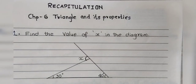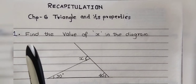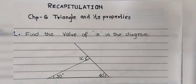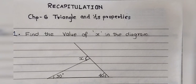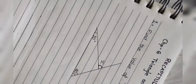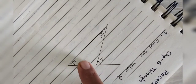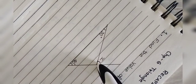The first question of the recap is: find the value of x in the given diagram. Triangle and its properties is the chapter where we deal with different properties valid for all triangles, except Pythagoras which is valid only for right angle triangles. Now, if the triangle has one side produced ahead, we get one angle outside the triangle — that angle is x.